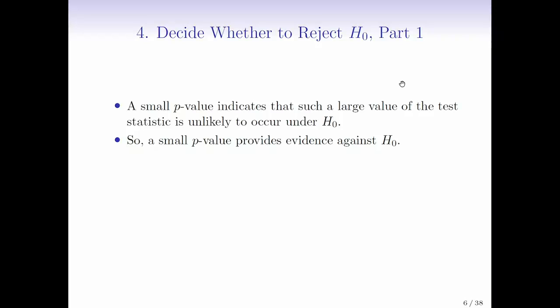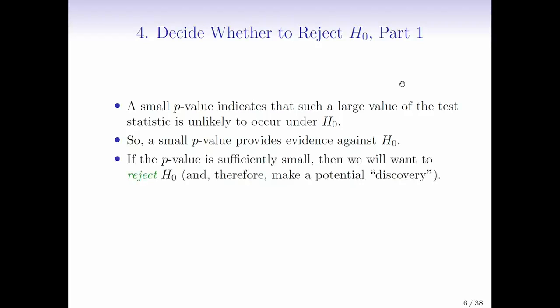Our p-value is small. That gives us some evidence against H0. Should we reject the null or should we not reject it? If it's really small, we want to reject the null hypothesis, and that would correspond to making a discovery where we've discovered something new and interesting about the world, hopefully.